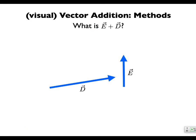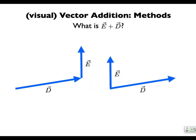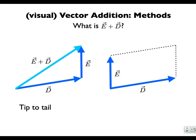Just conceptually adding up vectors, you put them tip to tail and then you connect the dots. Or you can use the parallelogram method: you draw a line parallel to D, a line parallel to E, and where they cross is where your new vector ends up. Most of the vectors we deal with end up perpendicular to each other, so everything we do involves right triangles.